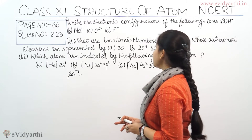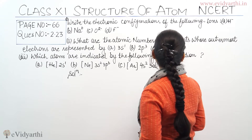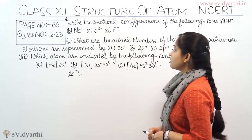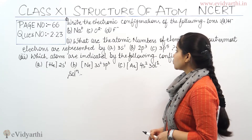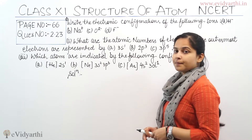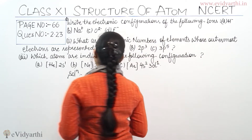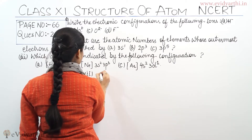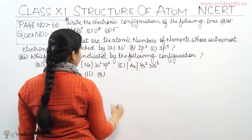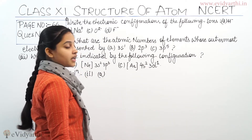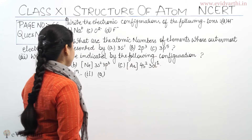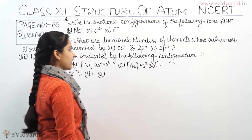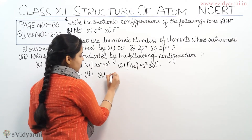Now moving on to the second part of the question: what are the atomic numbers of elements whose outermost electrons are represented by A) 3s1, B) 2p3, and C) 3p5. Let's begin with the A part of the second question. The outermost electrons are represented as 3s1.